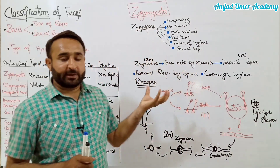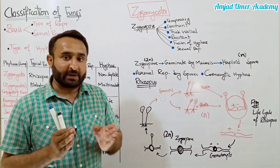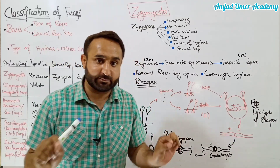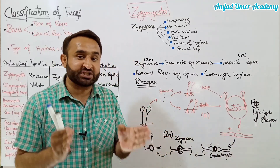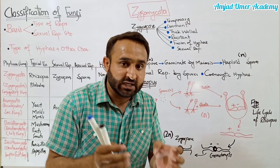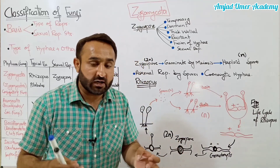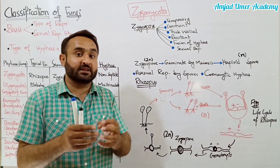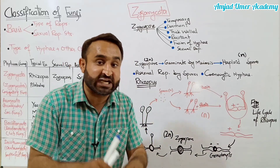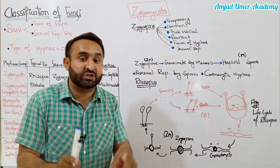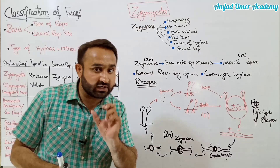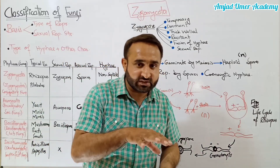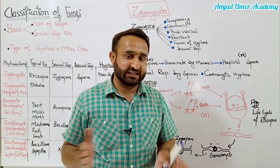Zygomycota ke pehle group mein aate hain. Zygomycota mein sexual reproduction ka process conjugation kehlata hai, is liye inhe conjugating fungi bhi kehte hain. Is sexual reproduction mein do different hyphae ek doosre ke kareeb aate hain aur apna genetic material exchange karte hain. Ye genetically different hote hain, yani genetic variants hote hain, is liye inhe strain kaha jata hai. Strain ka matlab hai jo apni genetics mein kuch variability rakhte hain.